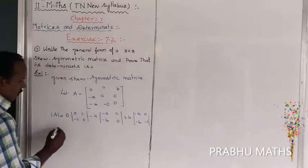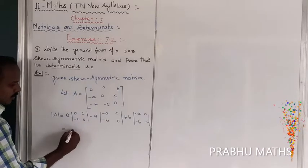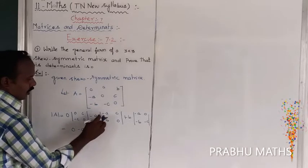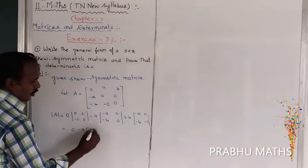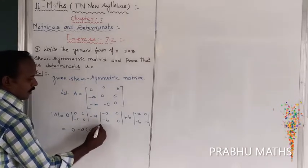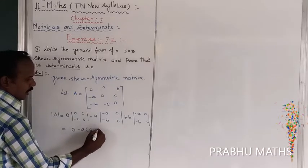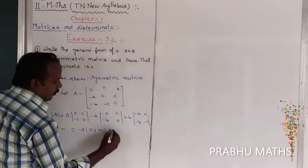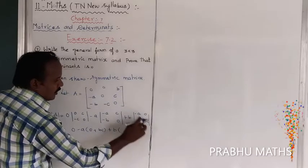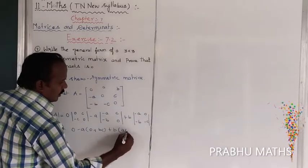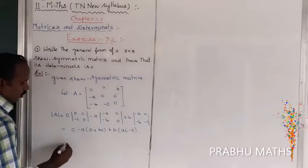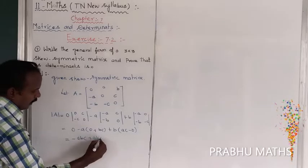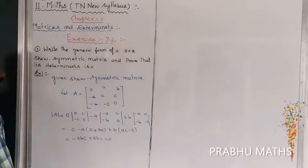Expanding the cofactors: the terms simplify such that minus A times B C plus A B C cancels out, giving zero. So the determinant is going to be zero.